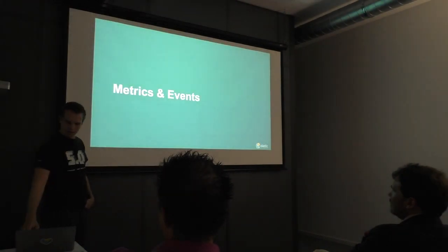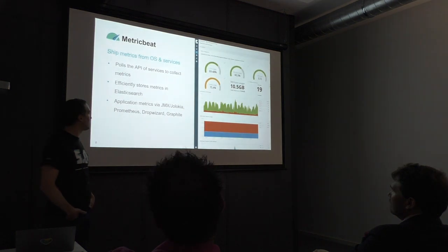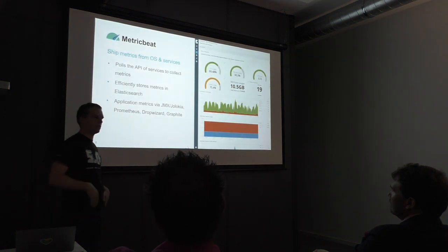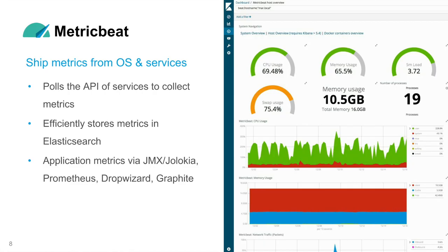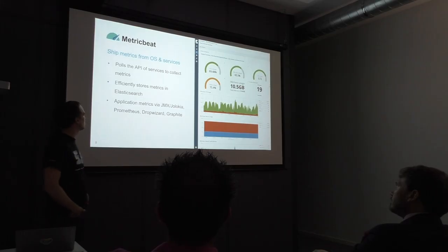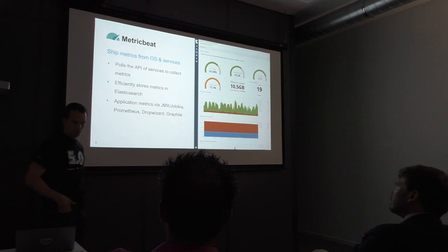For metrics and events, we have MetricBeat, which ships your system metrics, Docker and Kubernetes metrics, but also service metrics — Apache, Nginx, etcd. I think the list is at 40 to 45 modules now that we support. You just see a few here.